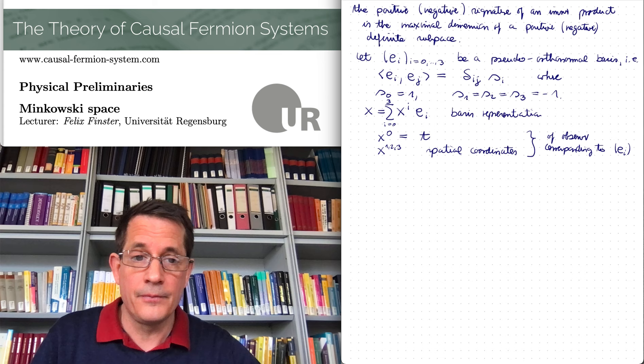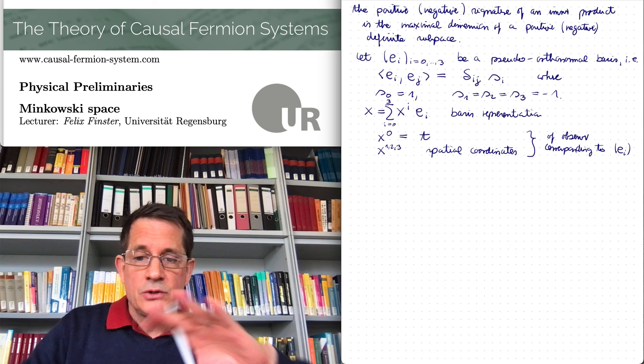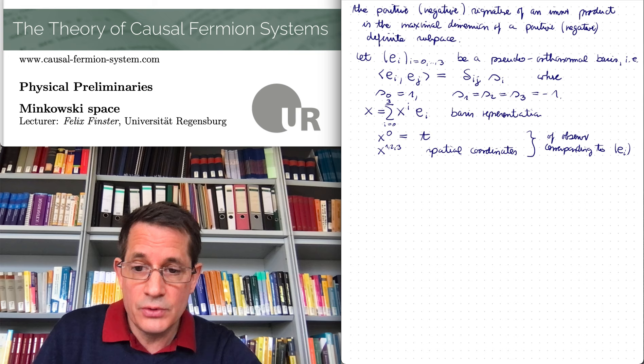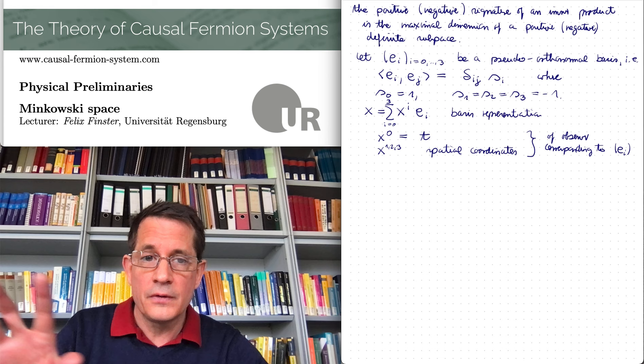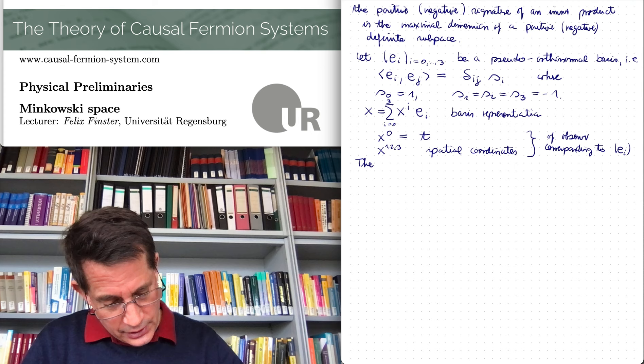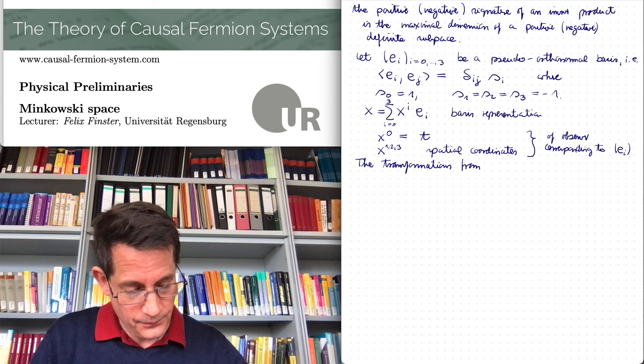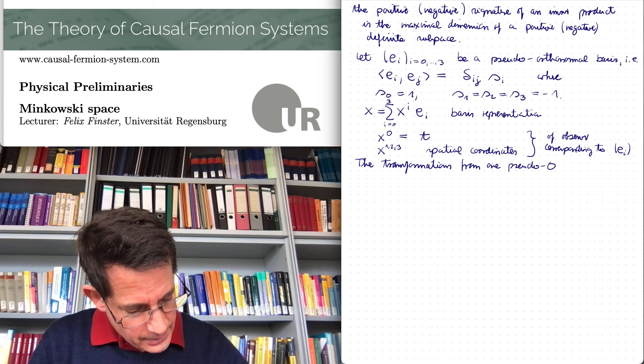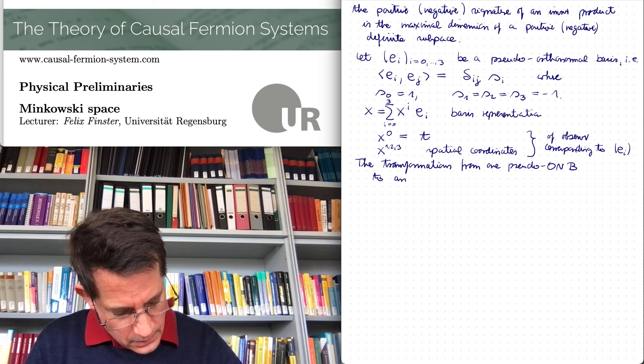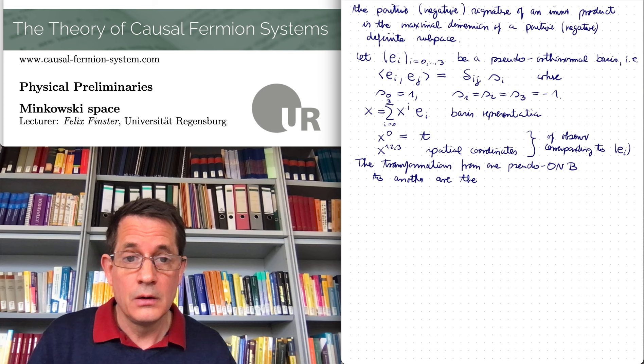This is the Lorentz frame corresponding to E_i. The transformation from one observer to another - the Lorentz transformation - corresponds simply to a change of pseudo-orthonormal basis. So the transformations from one pseudo-orthonormal basis to another are the Lorentz transformations.